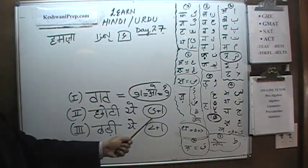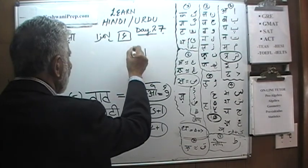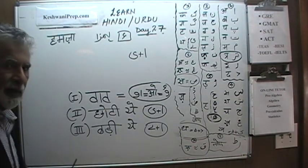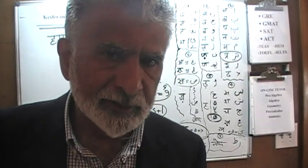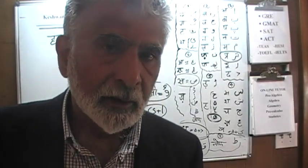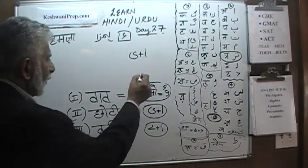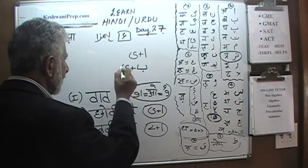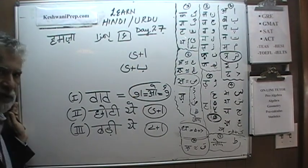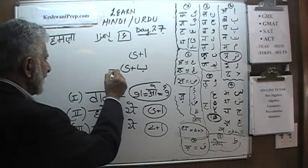Aleph is followed by Chhotiyeh. When we were learning Iki Matra — and we spent four days on that concept — we learned that any letter, for example the Urdu letter B, if you combine it with Chhotiyeh, gives us Badiyeh ki Matra.